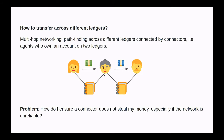If you want to transfer value across different ledgers, we can use multi-hop networking. We are going to find a path of ledgers and connectors, where connectors are intermediaries who own an account on two ledgers. These connectors are going to convert the value from one ledger to another.